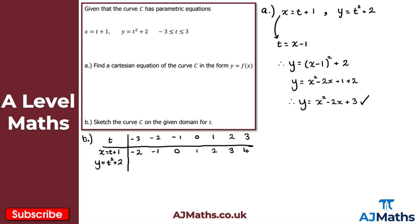Now substituting into y equals t squared plus 2: when t is minus 3, that's 9 plus 2, giving 11. When t is minus 2, that's 4 plus 2, giving 6. When t is minus 1, that's 1 plus 2, giving 3. When t is 0, we get 2. When t is 1, we get 3. When t is 2, we get 6. And finally when t is 3, we get 11.